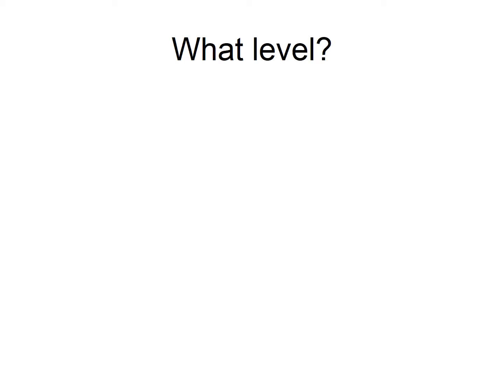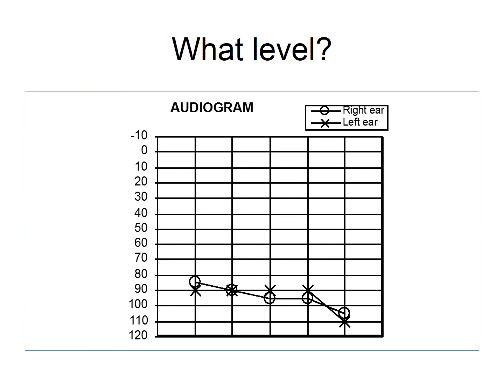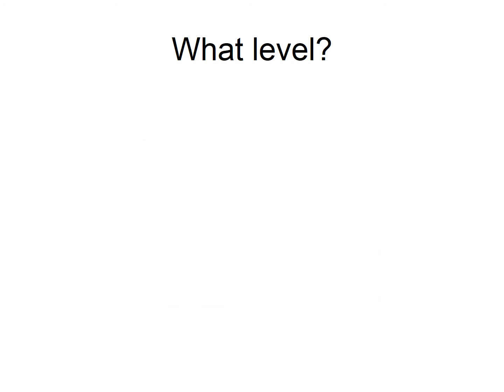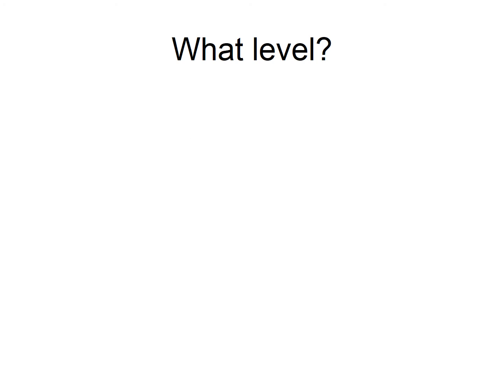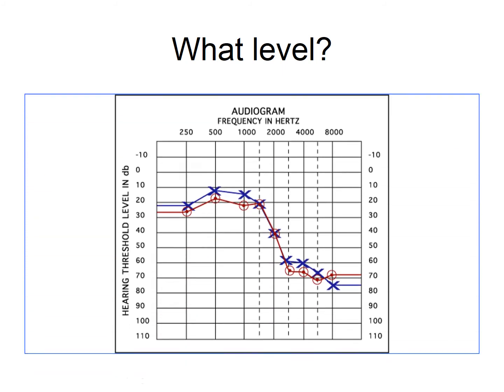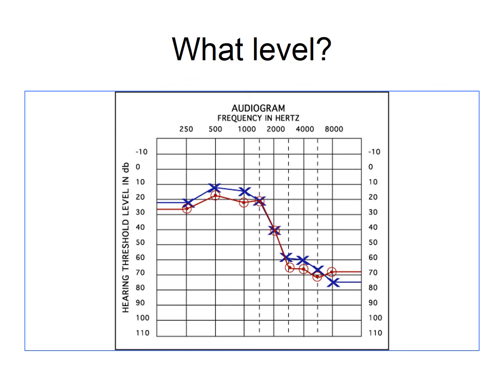Look at this audiogram — what level of deafness do you think this child or young person has? Is it the same in both ears or different? Now look at this audiogram — are both ears similar or different? Which ear has the better hearing? What level or levels of deafness do the ears have? Lastly, look at this audiogram — which types of sounds will this child or young person struggle to hear most? Low or high pitch sounds? Can you identify any particular sounds that this child may struggle to hear? Remember, you are allowed to look back at the pictorial audiogram, and the answers will follow shortly.